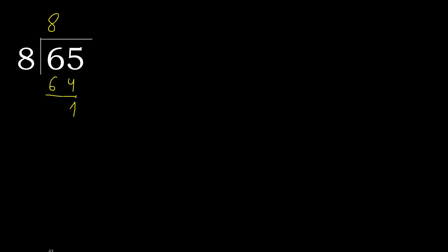There is no next digit, therefore we complete with a decimal point. Complete point. Bring down a 0 — we now have 10.